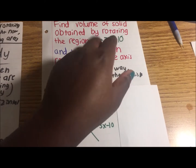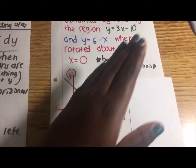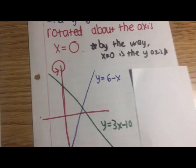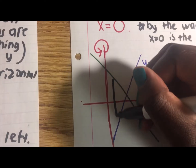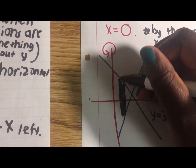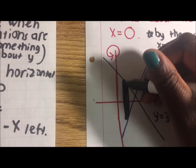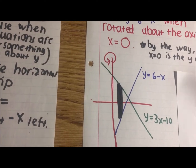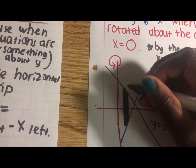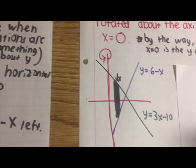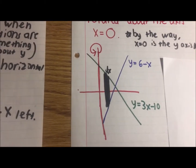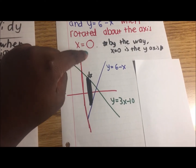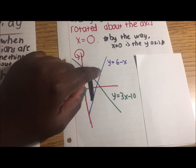The equations are y equals something in x and y equals something in x, so we use a vertical strip. The rotating axis is x equals 0, which is the y-axis. The strip is vertical and the rotating axis is also vertical.